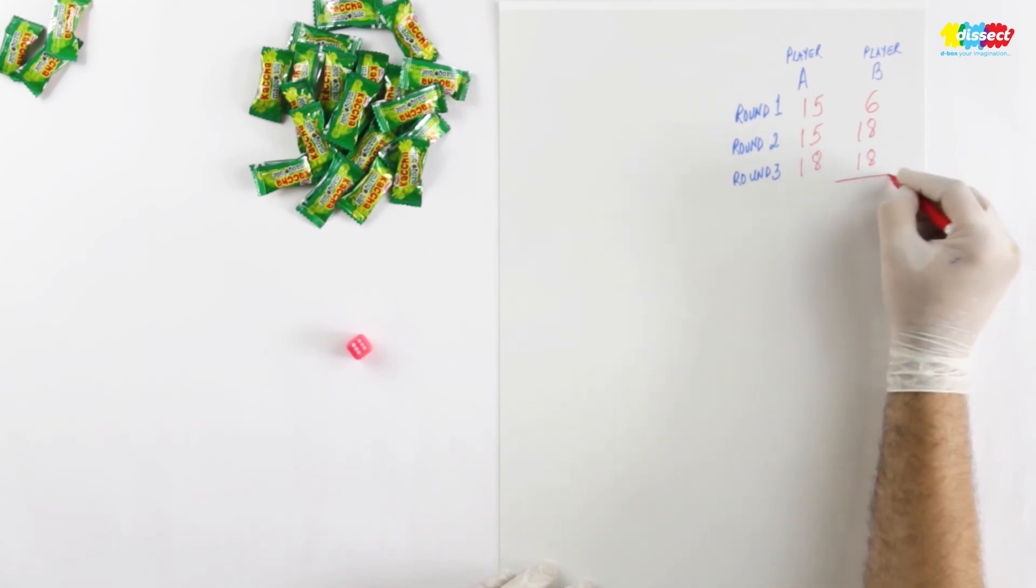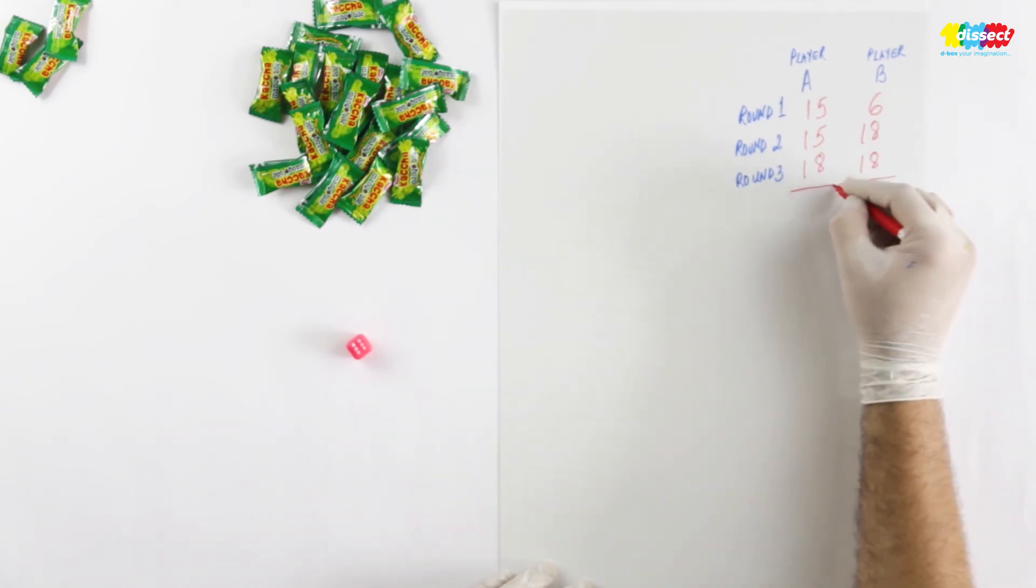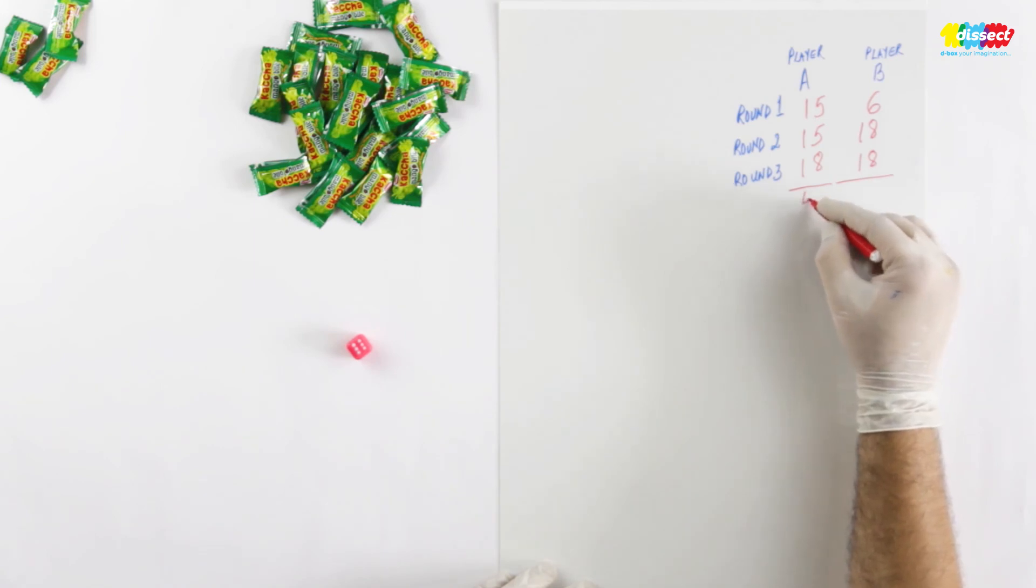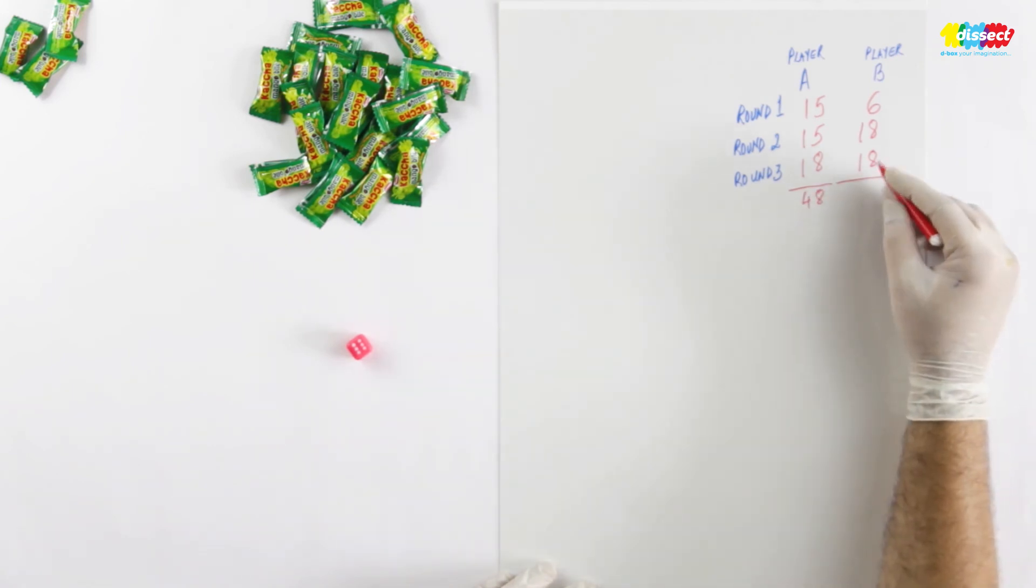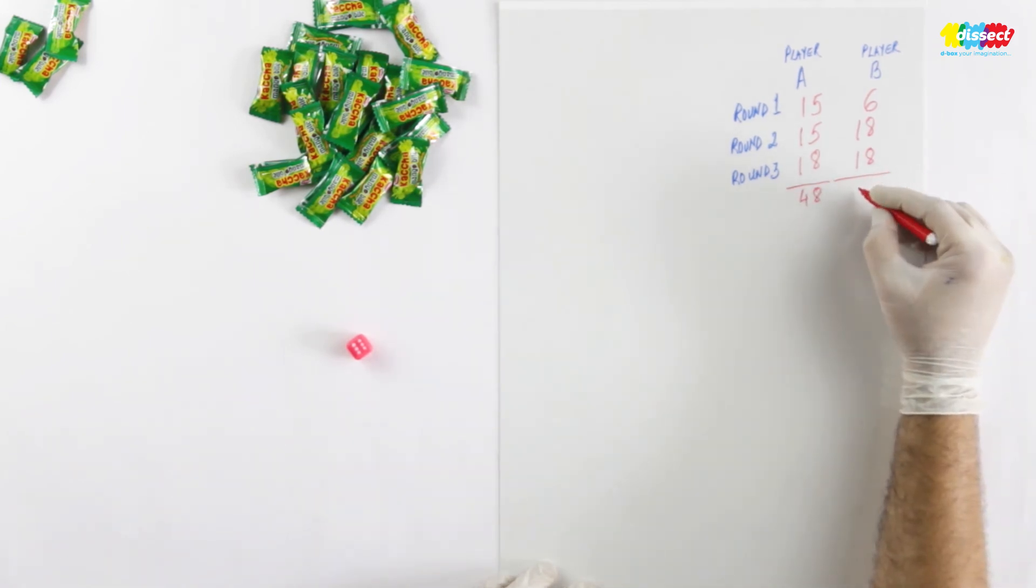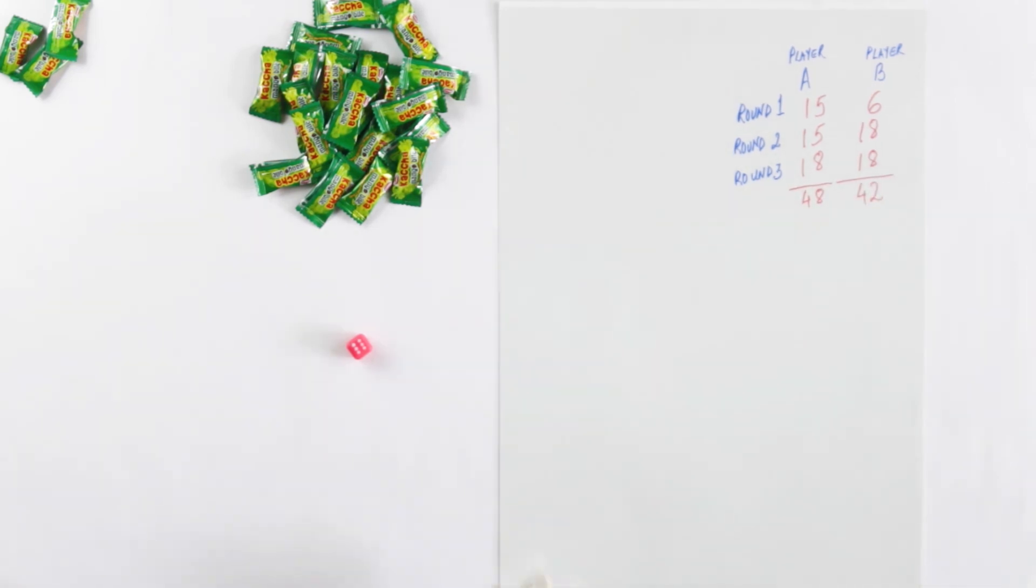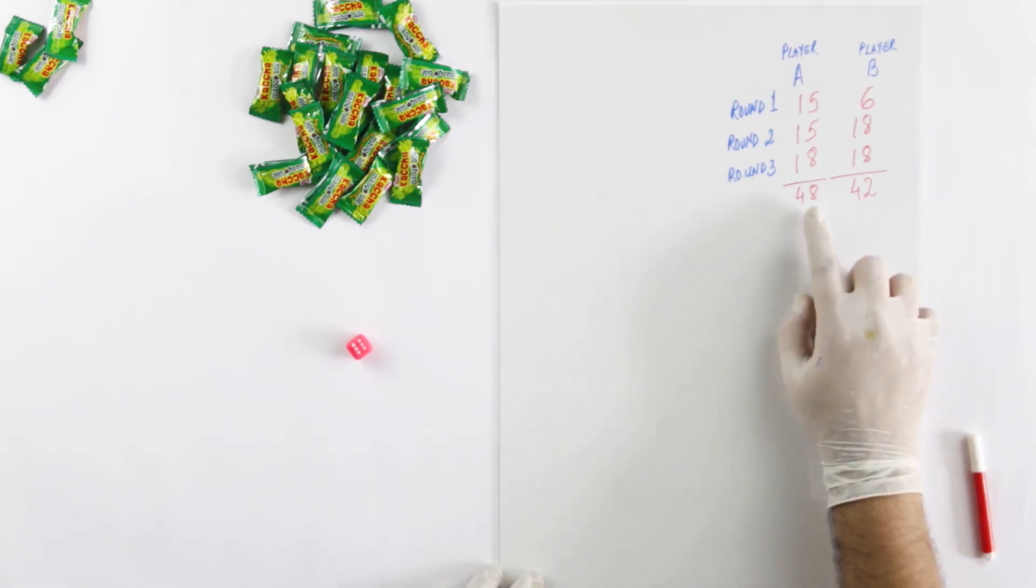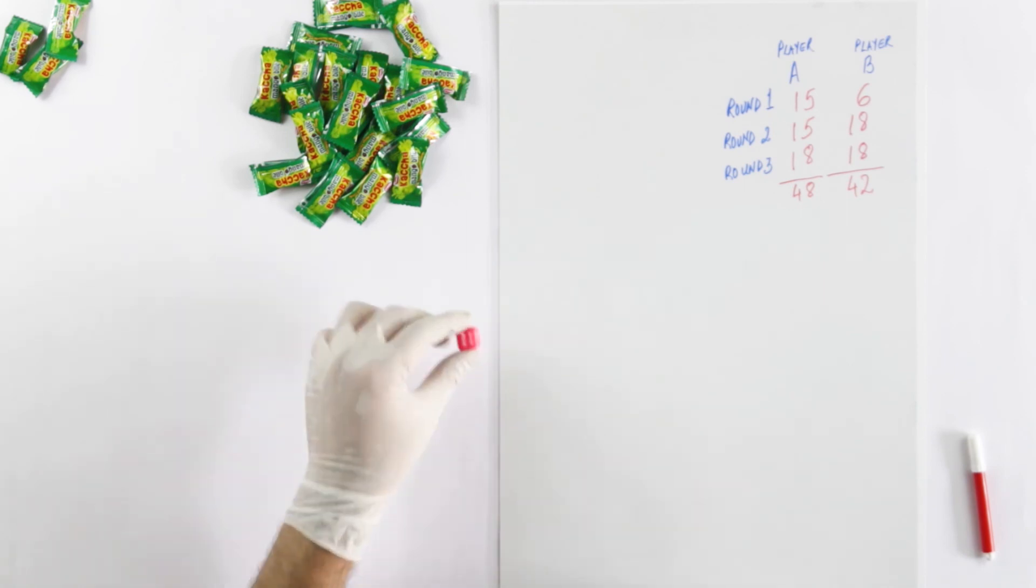Let's see what are the total scores. Player A has 48. And player B has 42. So we can see that player A has won this game of dice.